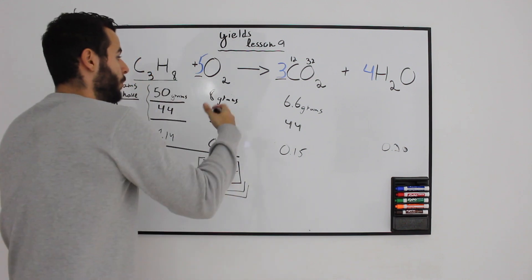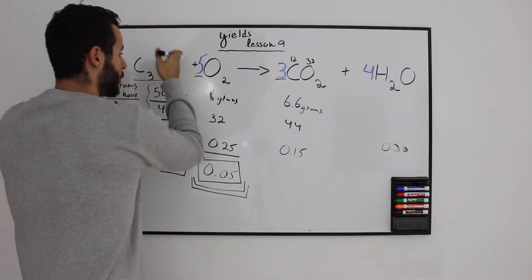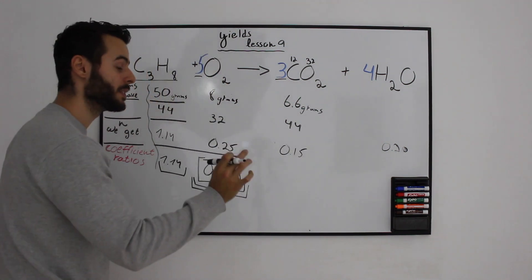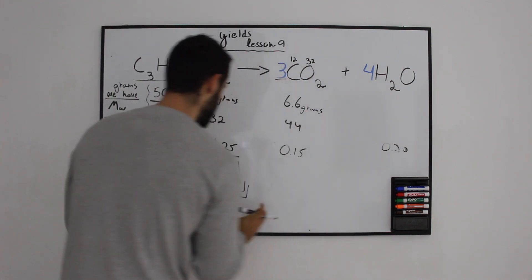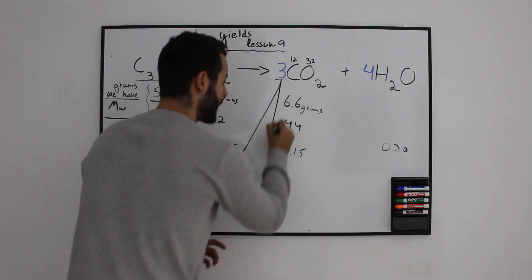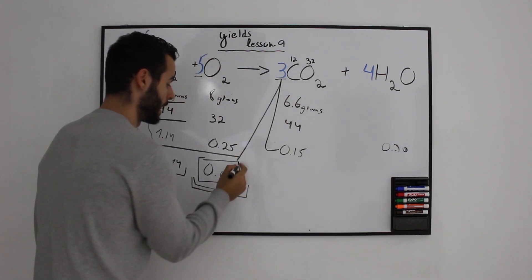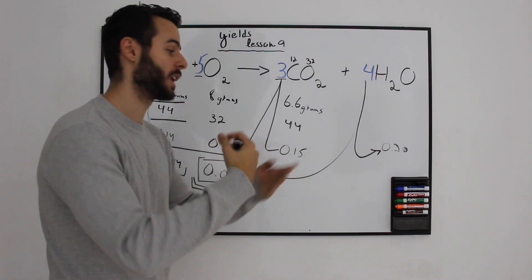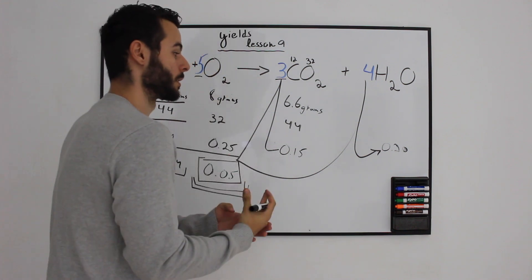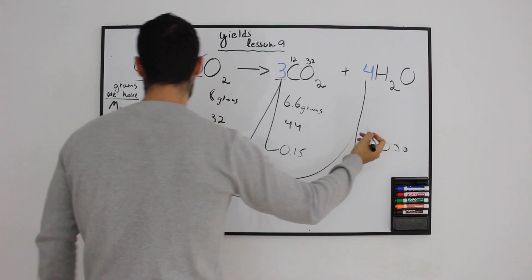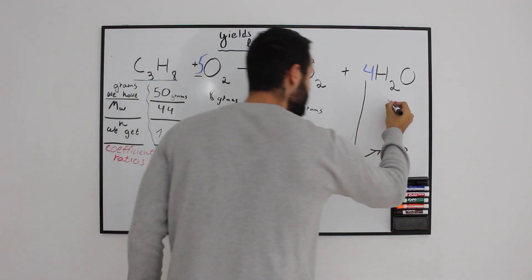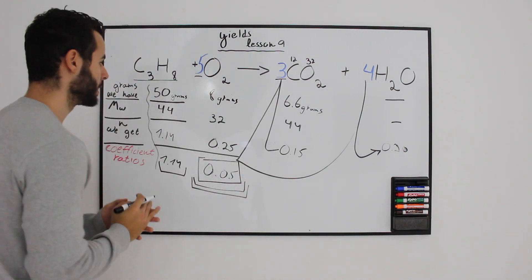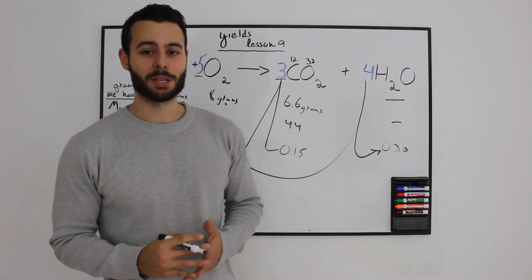For the products, we take the limiting reactant's coefficient ratio of 0.05 and multiply by the coefficients. Multiply by 3 to get the moles of CO₂, and multiply by 4 to get the moles of H₂O. Then, knowing the moles of each product, we climb up the table, multiply by the molecular weight, and get the grams of each product — filling the entire table based only on the information given.